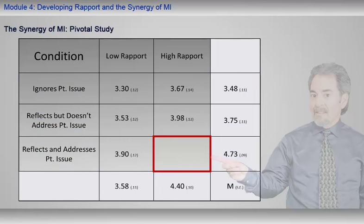The startling result was the extremely large synergistic interaction that occurred only in the cell representing MI. As you can see, the means for the five non-MI cells have been entered, ranging from 3.3 to 3.98. If there were no significant synergy of rapport with reflecting and addressing the patient's issues, then the estimated mean in the MI cell should be approximately 4.35. This estimated mean results from adding the simple impact of rapport to the simple impact of reflecting and addressing the patient's issue — it's an additive estimate of the mean for the MI cell.